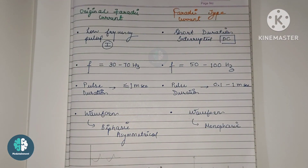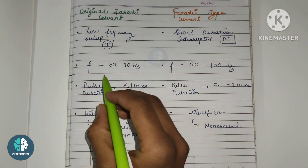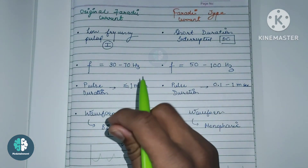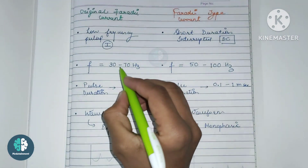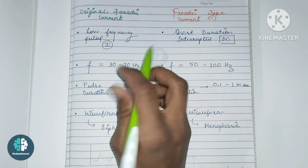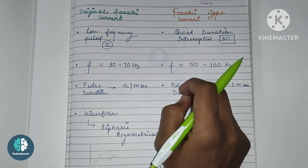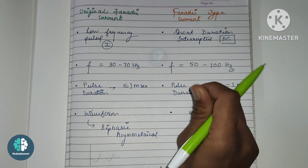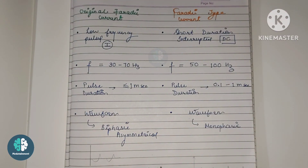Next is frequency. The original faradaic current has a frequency of about 30 to 70 hertz, whereas the faradaic type current is about 50 to 100 hertz. Both differ slightly — the original has a lower frequency range while the faradaic type has a wider frequency range.